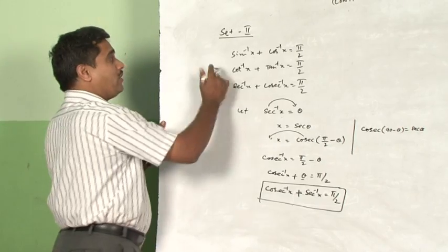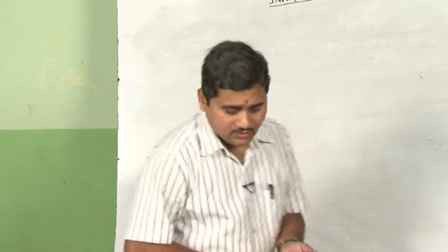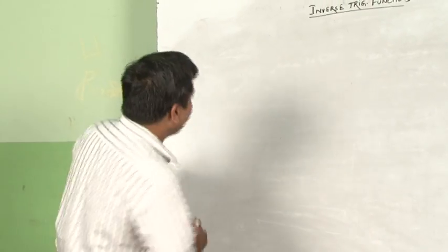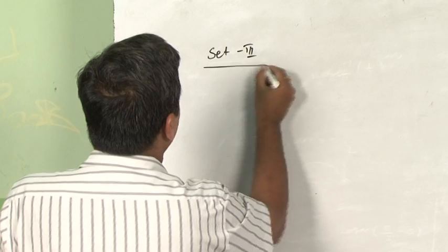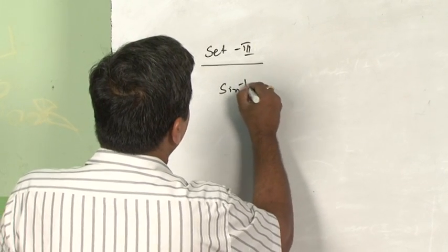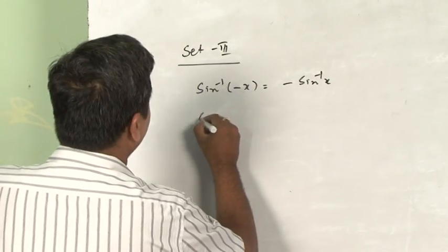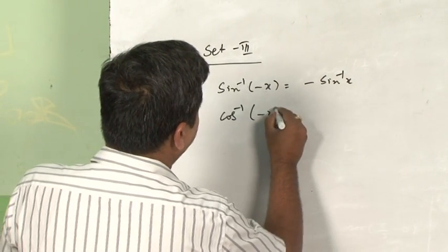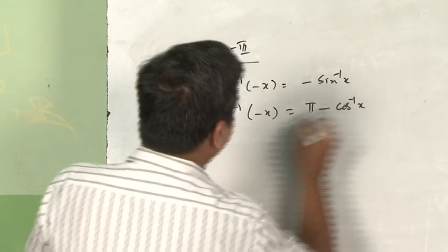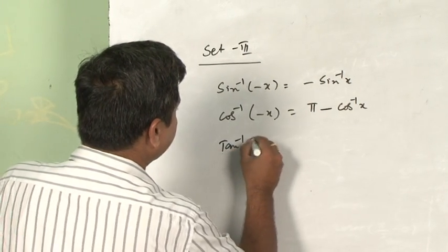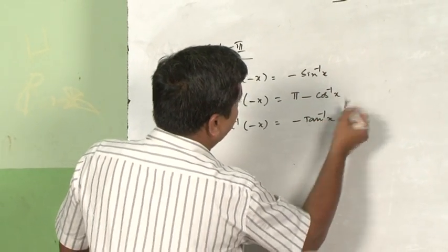In a similar fashion, you may also prove the remaining two. Now we shall think about Set 3 properties. Sin inverse(minus x) is equal to minus sin inverse x. Cos inverse(minus x) is equal to π minus cos inverse x. Tan inverse(minus x) is equal to minus tan inverse x.